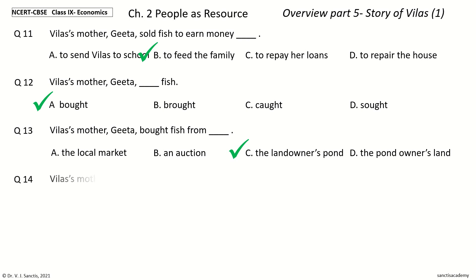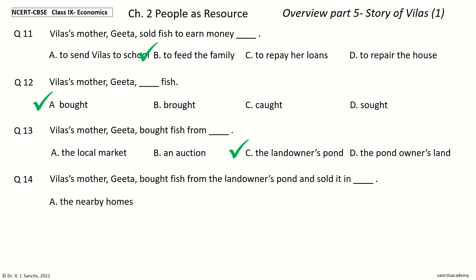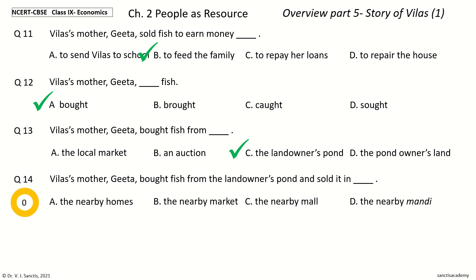Question 14: Vilas's mother Geeta bought fish from the landowner's pond and sold it in dash. The options are: a) The nearby homes, b) The nearby market, c) The nearby mall, d) The nearby mandi. And the answer is The nearby mandi. So Vilas's mother Geeta bought fish from the landowner's pond and sold it in the nearby mandi.